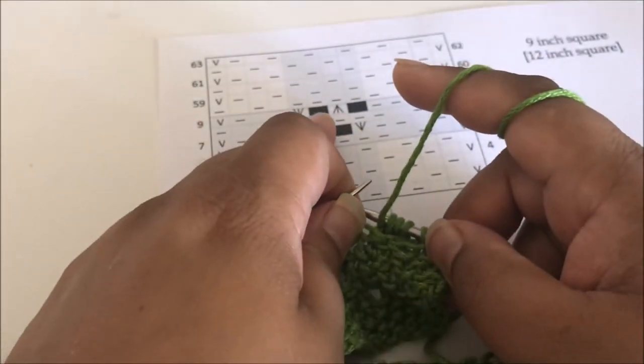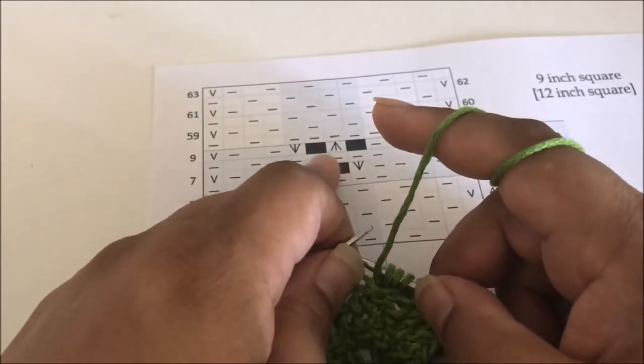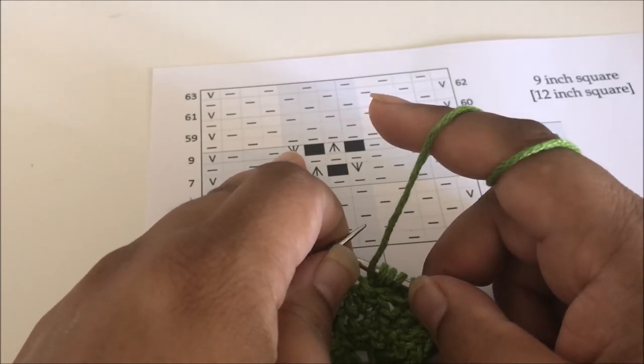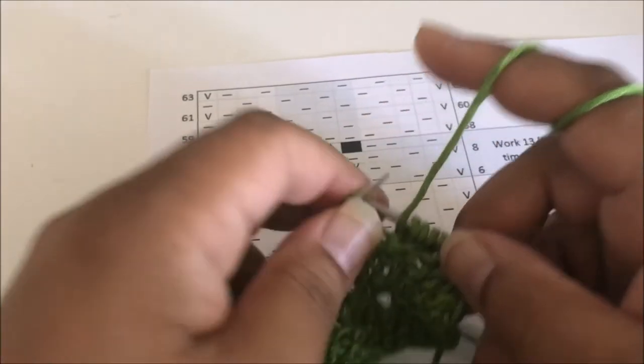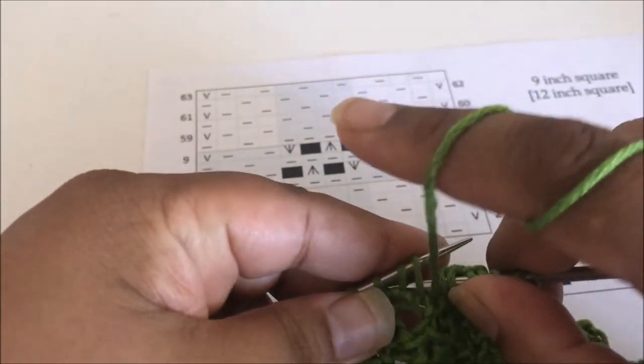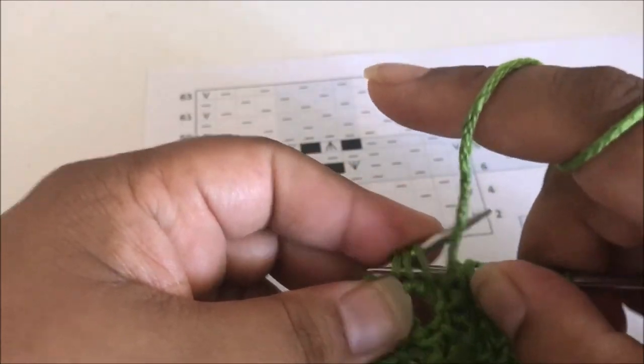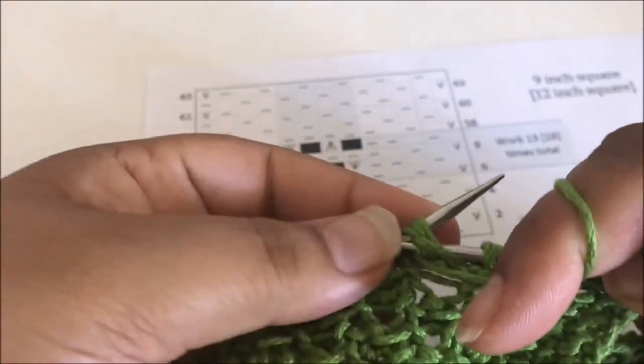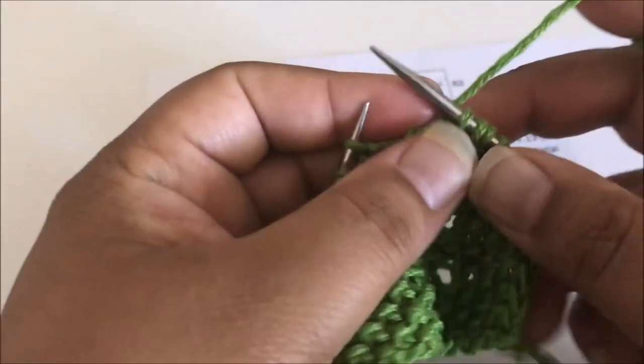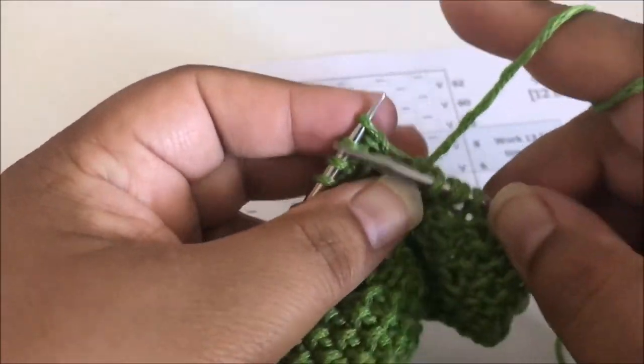So we just skip right over those. Knit, purl, knit in the same stitch, and then knit three together. Ignore any of the black boxes. So there we go. And purl those three together. Let's do this again without all the fuss.